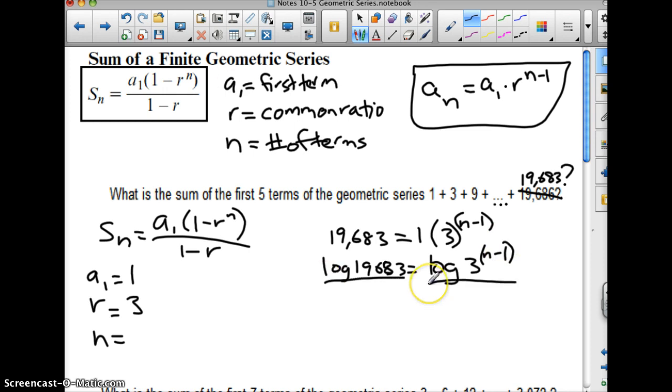Log 19,683 equals log 3 to the n minus 1. I'm sorry, I've already divided both sides by 1 here, so that I'll have the 3 to the n minus 1 alone. I'm getting ahead of myself. I'm going to use the power rule of logarithms to rewrite this as n minus 1 times the log of 3. There we go.